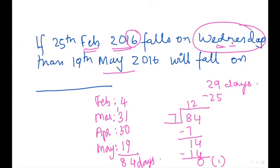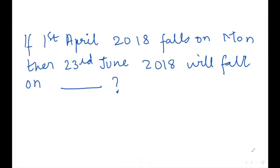If there had been remainder 1, we would go plus one day — that is Thursday. If there had been remainder 2, we would go plus two days ahead — that is Friday. Let's take another example: 1st April 2018 falls on Monday; then 23rd June 2018 will fall on which day?